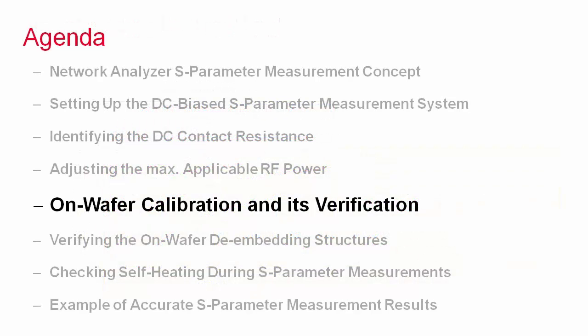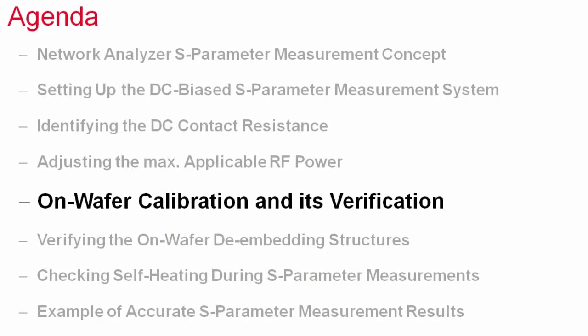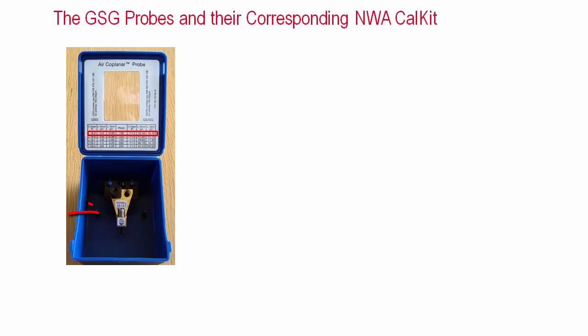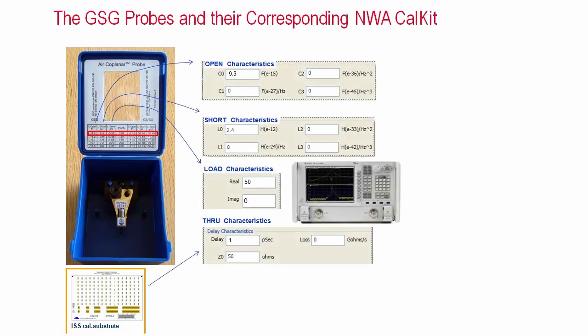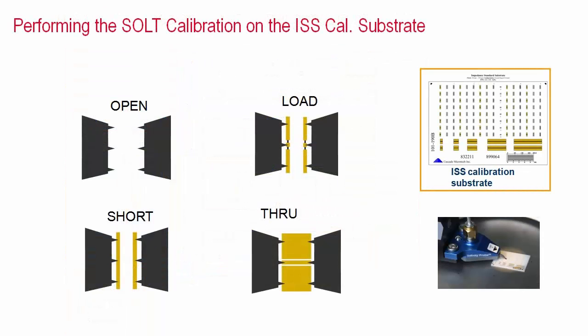Once this signal level has been identified, we are ready to perform the network analyzer calibration, applying this power level. First of all, the applied ground signal ground probe and the probe calibration substrate must correspond. The cal standard definitions provided by the probe manufacturer describe the non-idealities of the calibration standards and need to be entered to or selected by the network analyzer's calibration program. After that, the calibration can be performed.